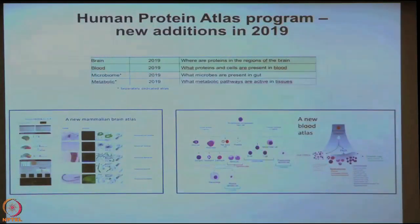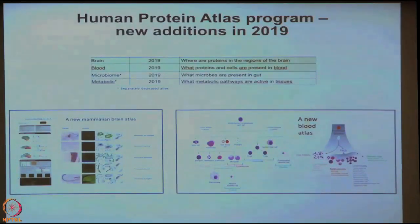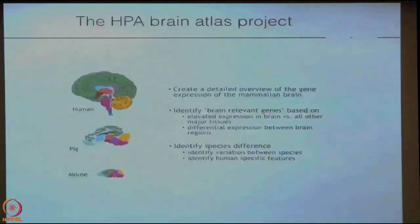This is the status today, and what we are doing now will be the most major update of the Protein Atlas so far, in about four to five months. We will introduce both the Brain Atlas and a Blood Atlas, and maybe later in the fall, a microbiome and a metabolic atlas will be introduced as well.